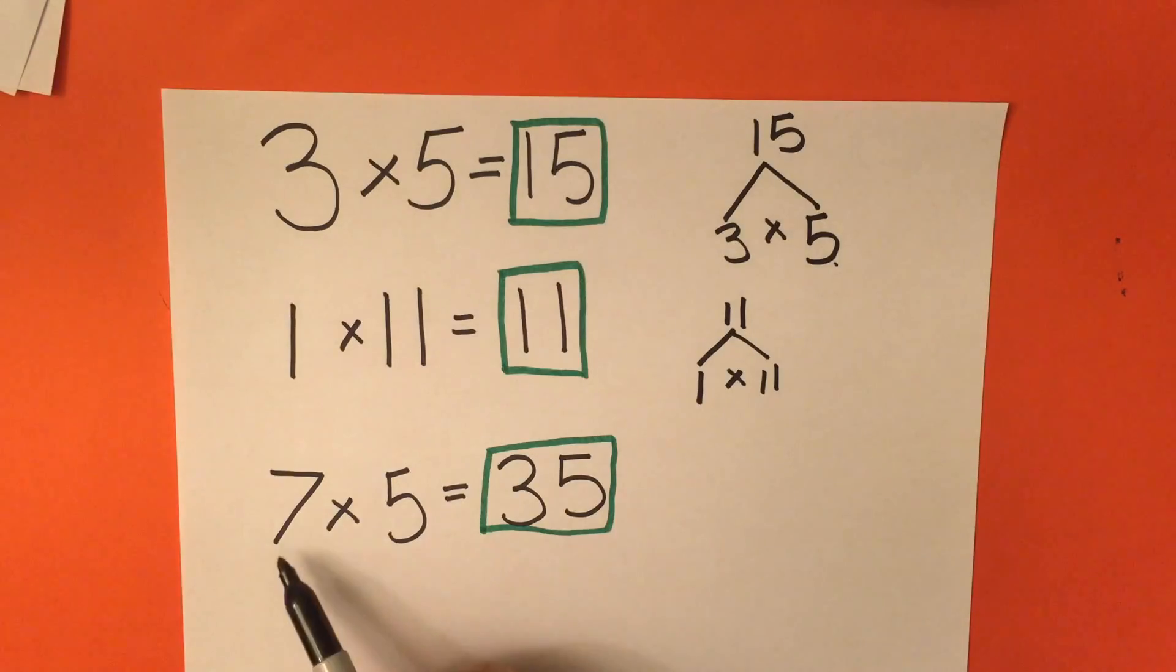And, for our last example, 7 times 5 equals 35. Here, we have our two factors, and our answer, or multiple.